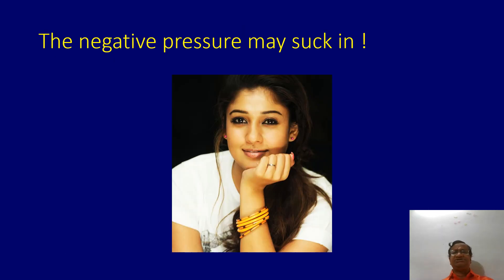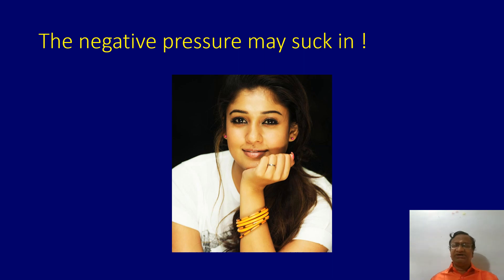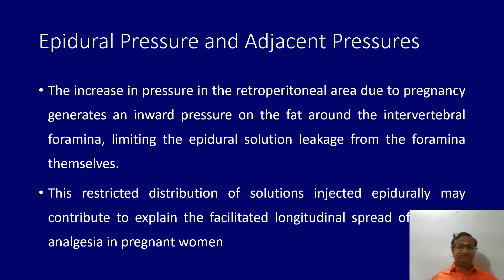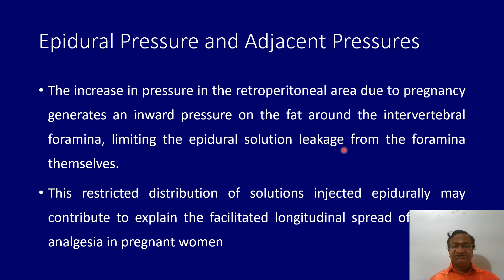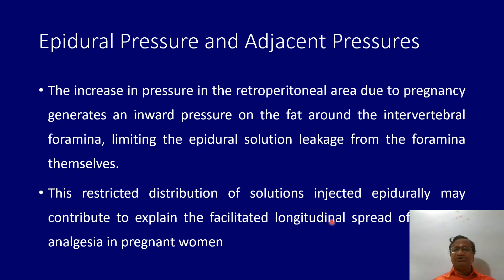Epidural pressures are very important. The drug will be sucked in because of the negative epidural pressure. Even if you inject slowly, the effective rate may be more than 1 ml per second. In pregnancy, the increase in pressure in the retroperitoneal area generates an inward pressure, limiting epidural solution leakage and facilitating longitudinal spread. These are innumerable causes to decrease your epidural drug dosing in pregnancy.